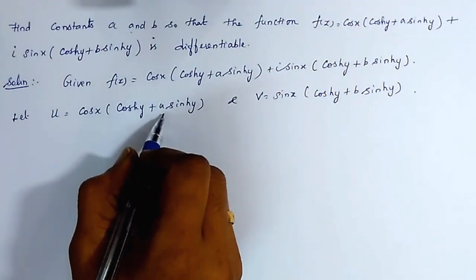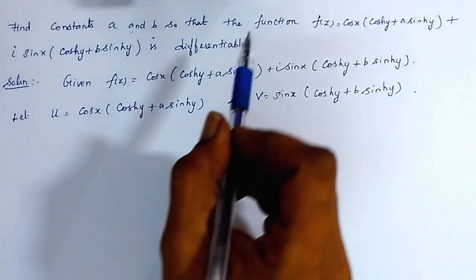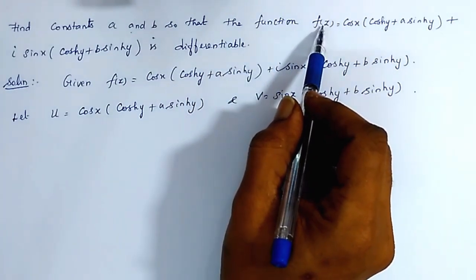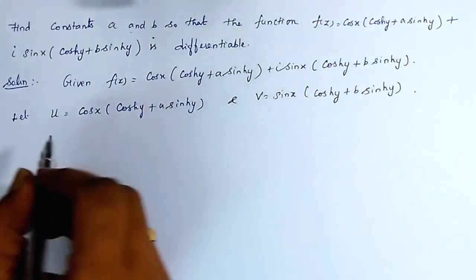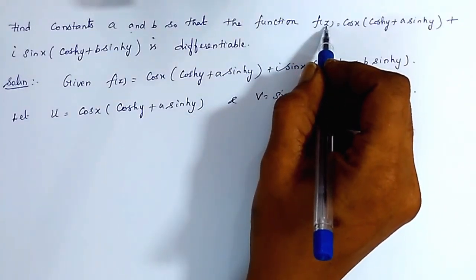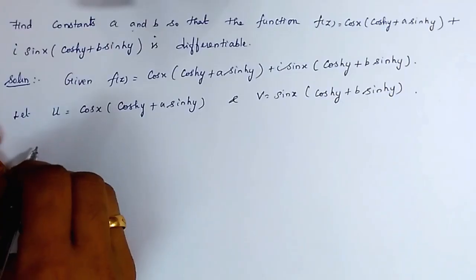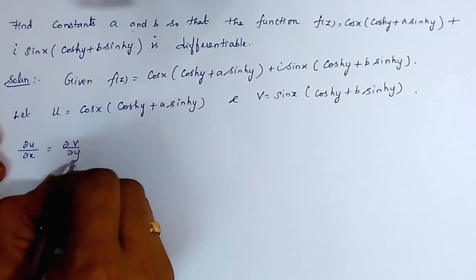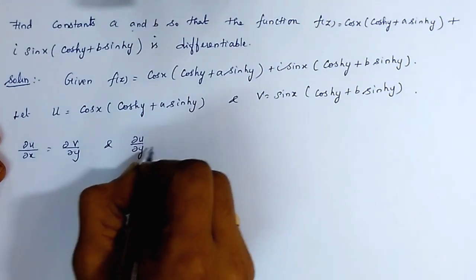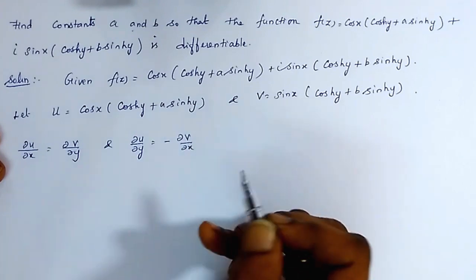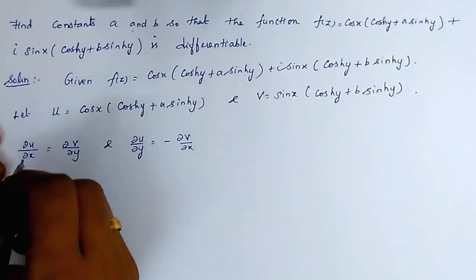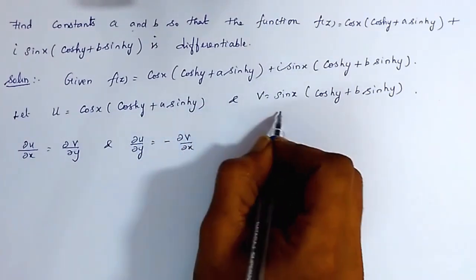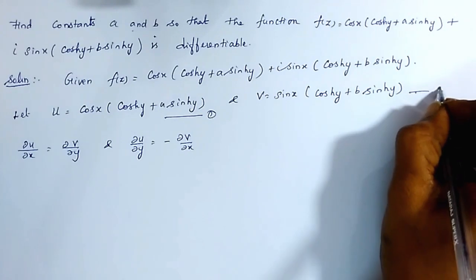Now find the values of a and b using the given condition. Since f(z) is differentiable, u and v satisfy the Cauchy-Riemann equations. The CR equations are: ∂u/∂x = ∂v/∂y (equation 1) and ∂u/∂y = −∂v/∂x (equation 2). We will now find ∂u/∂x, ∂u/∂y, ∂v/∂x, and ∂v/∂y.